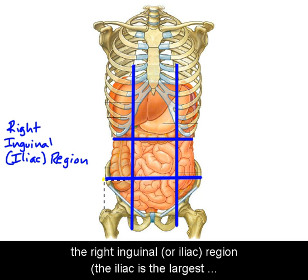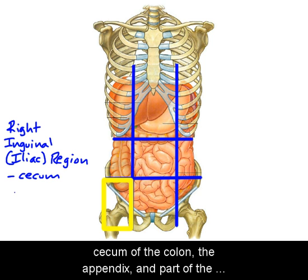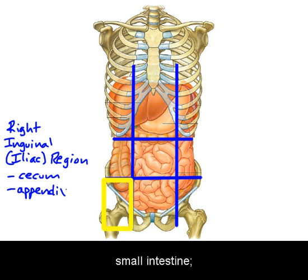The right inguinal or iliac region — the iliac referring to the largest part of the hip bone — contains the bottom of the cecum of the colon, the appendix, and part of the small intestine.